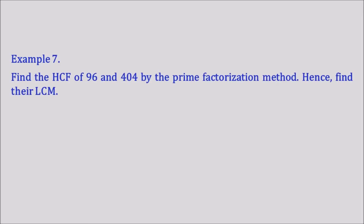Example 7 says: find the HCF of 96 and 404 by the prime factorization method. Hence find their LCM. That means the question tells us we need to find the HCF of 96 and 404 using the prime factorization method, and once we get the HCF, we need to find the LCM.